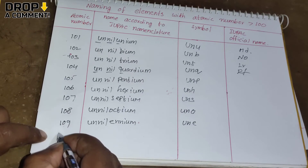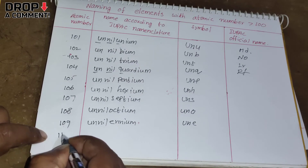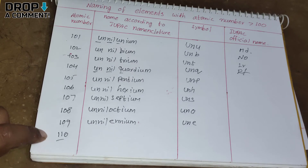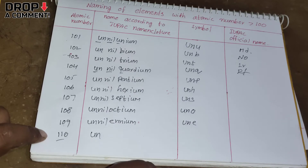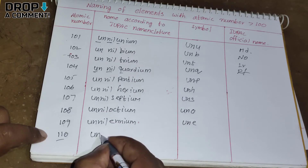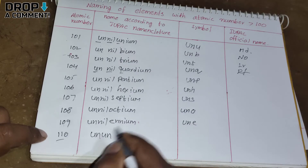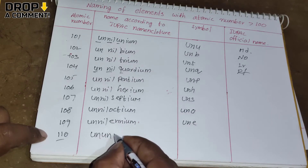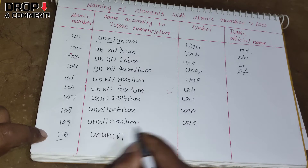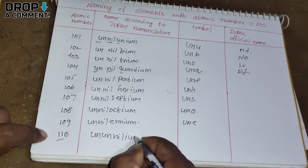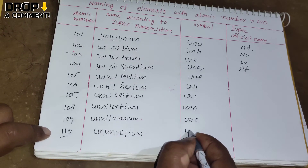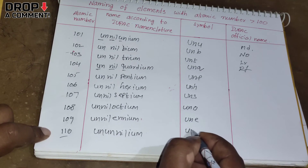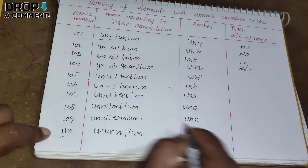For element 110: 1 = un, 1 = un, 0 = nil, plus '-ium' gives Ununnil­ium. The symbol is Uun.